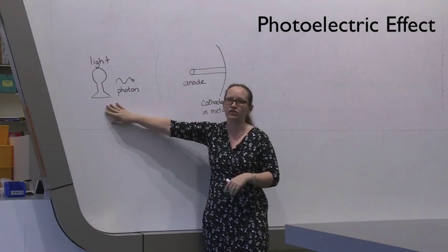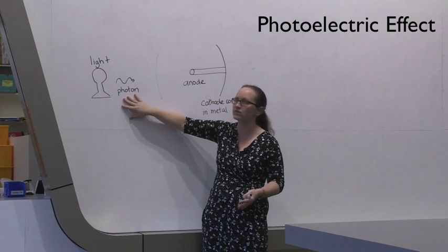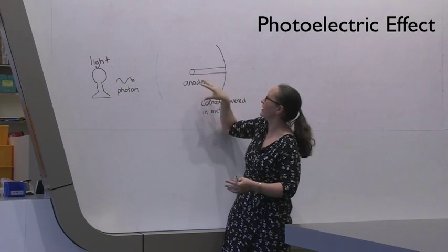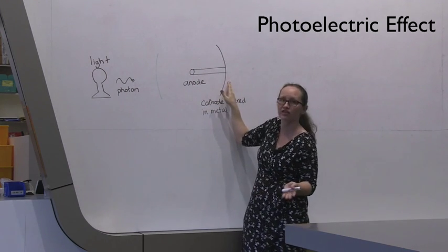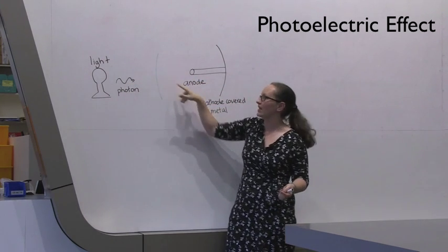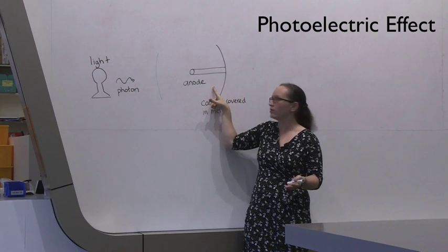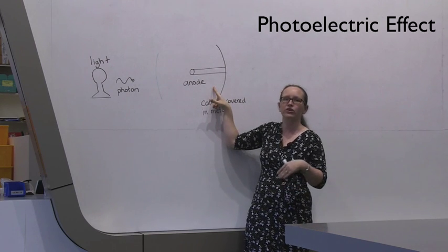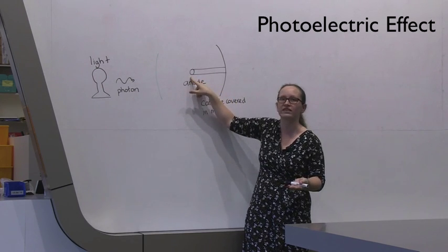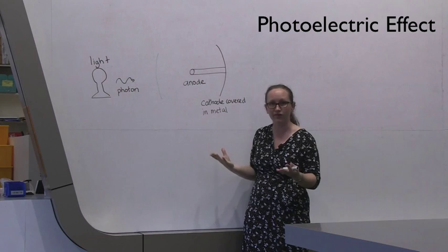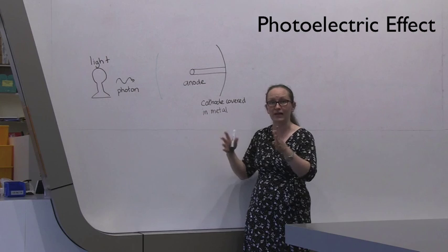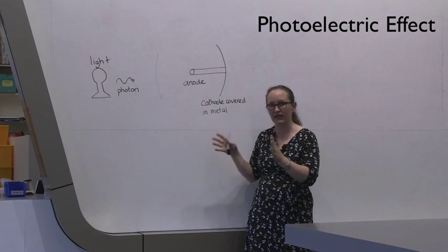You're going to have a light source which is producing photons, which travel from the light towards the black box containing a cathode, which is covered in metal, and an anode. If the photons have enough energy when they hit the metal on the cathode here, it's going to cause an electron to be released, and the electron will travel towards the anode and generate a photocurrent there, which will be detected by the voltmeters and ammeters and things within the little black box.